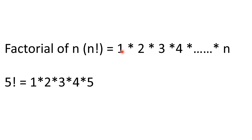How the factorial is generated for a number: if you want the factorial of n, the multiplication starts from 1, then multiplies by 2, then by 3, and this continues till n. For example, the factorial of 5 starts from 1 and continues till 5. The factorial of 7 would be 1×2×3×4×5×6×7. That is how the factorial of a number is generated.